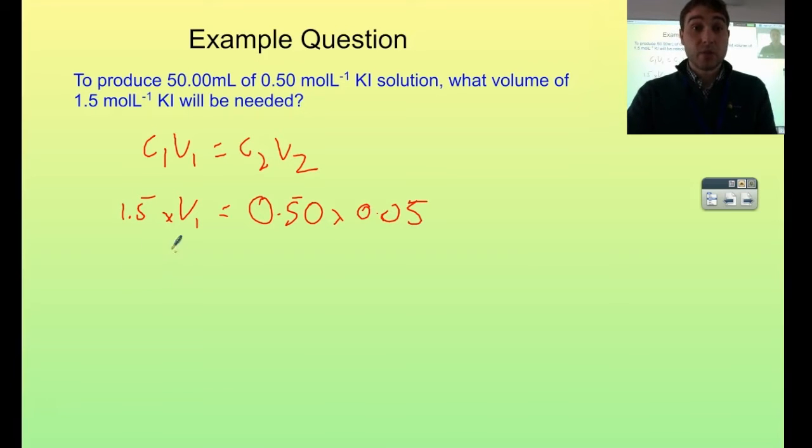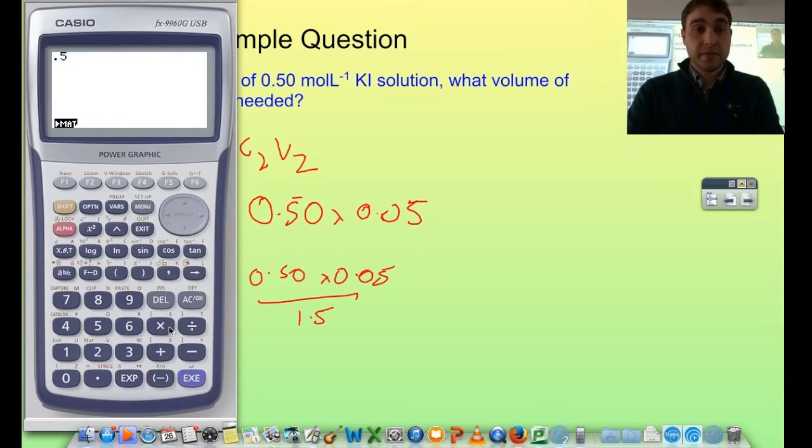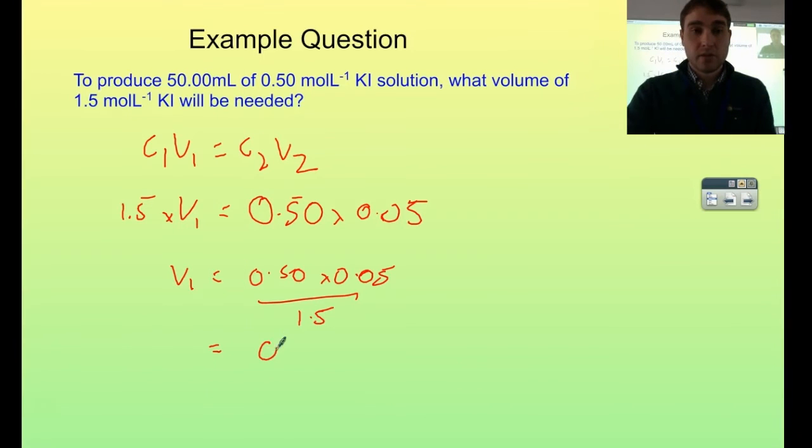Now we need to rearrange the equation. We've got 1.5 multiplied on this side, so to switch it over we divide both sides by 1.5. So V1 equals 0.50 times 0.05 divided by 1.5. Going to my calculator: 0.5 times 0.05 equals, divided by 1.5, and I get 0.017. With two significant figures everywhere else, that's 0.017 litres, or 17 mL.